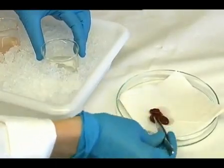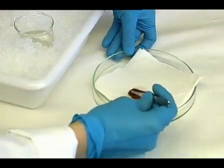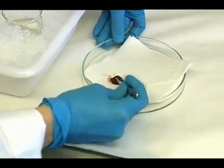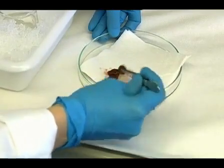Dry the hearts out on the filter paper. Remove all fat, clotted blood, fascia and atria and pull the ventricular tissue.